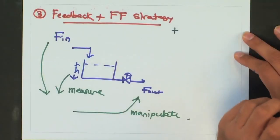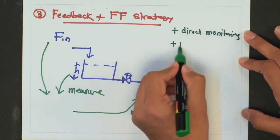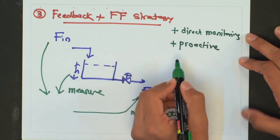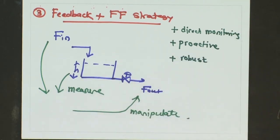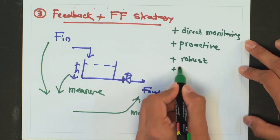These are the advantages and disadvantages of a feed forward control strategy. The feedback and feed forward strategies were combined so that you add up the advantages of both and try to get rid of the limitations. The advantage of the feedback plus feed forward strategy is that it provides direct monitoring, it can be proactive, it can also be robust, and it can work in the presence of unaccounted disturbances.